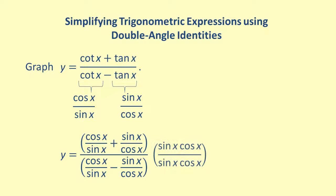Next, multiply the numerator and denominator by sine of x times cosine of x and simplify. Thus, we get y equals the quantity cosine squared of x plus sine squared of x over the quantity cosine squared of x minus sine squared of x.